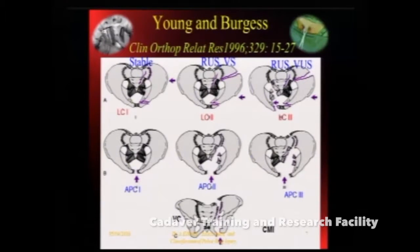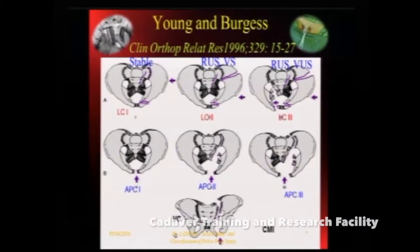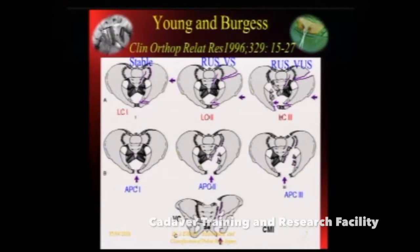Very often it is practically impossible in real life situations to put a finger on exactly what you are treating, especially with combination injuries. But one has to have an idea of what we are dealing with. If you have an anterior-posterior compression injury, you basically have an expansion of the pelvic volume. If you have more than 20 to 40% expansion — equivalent to more than 5 centimeters of diastasis anteriorly — there is a high risk of threatening vascular bleed: 80% of the times venous, 10 to 20% arterial.